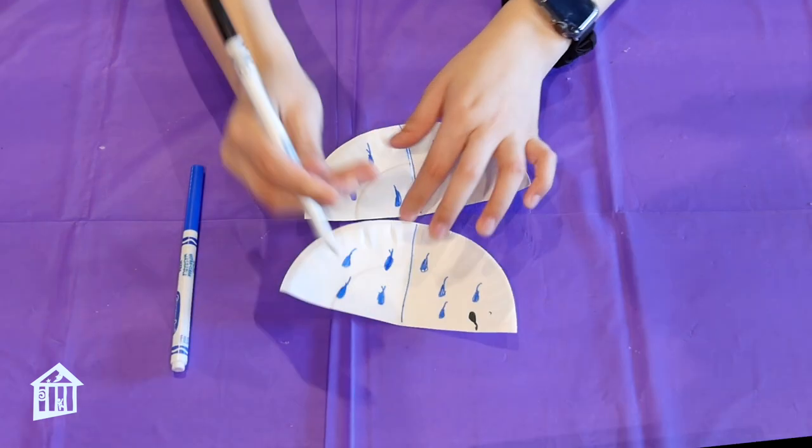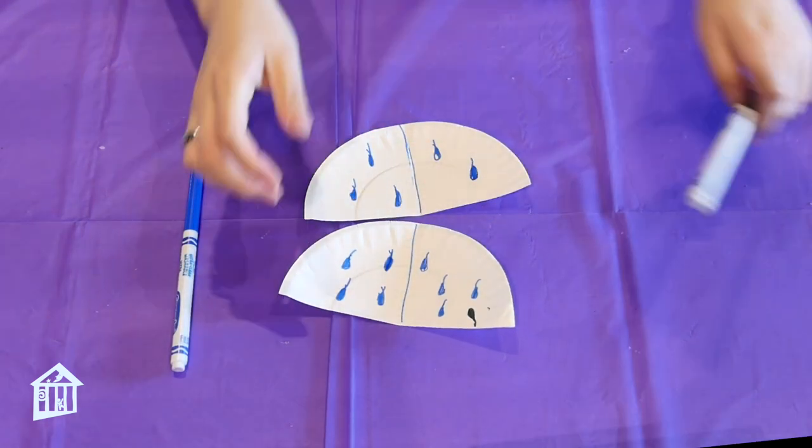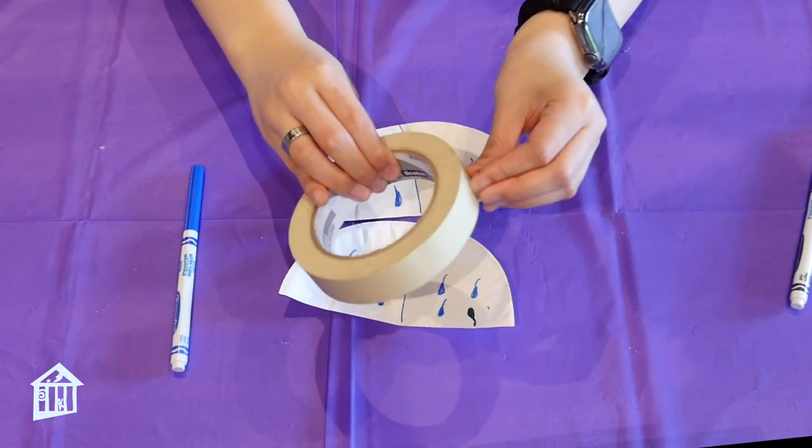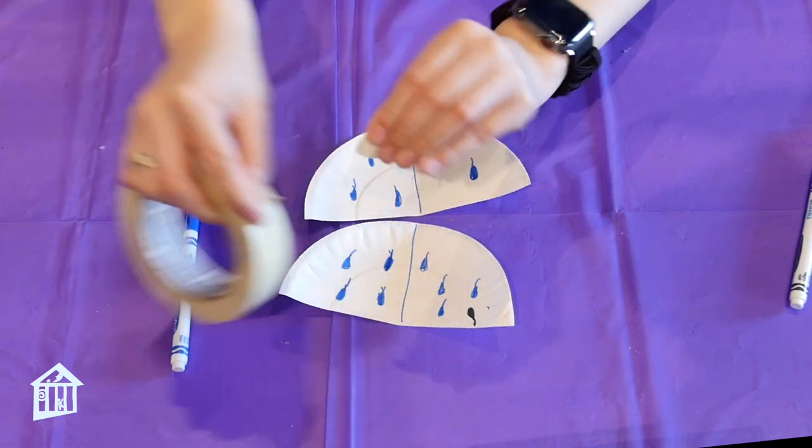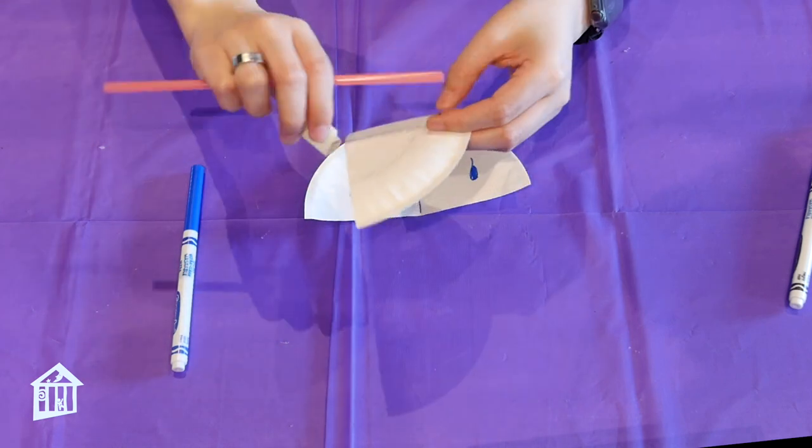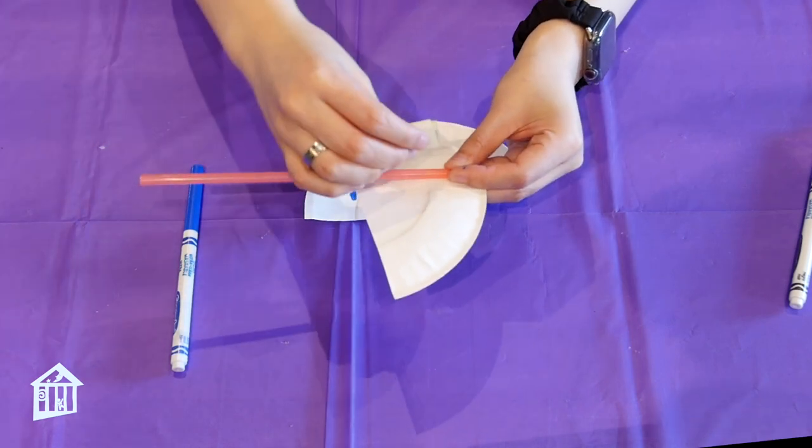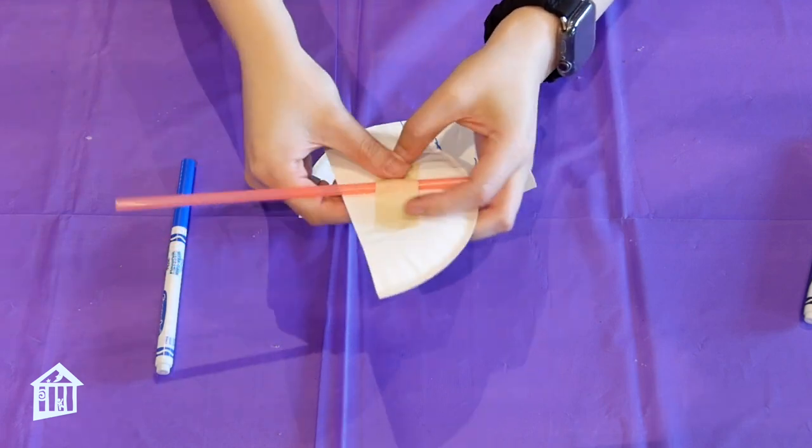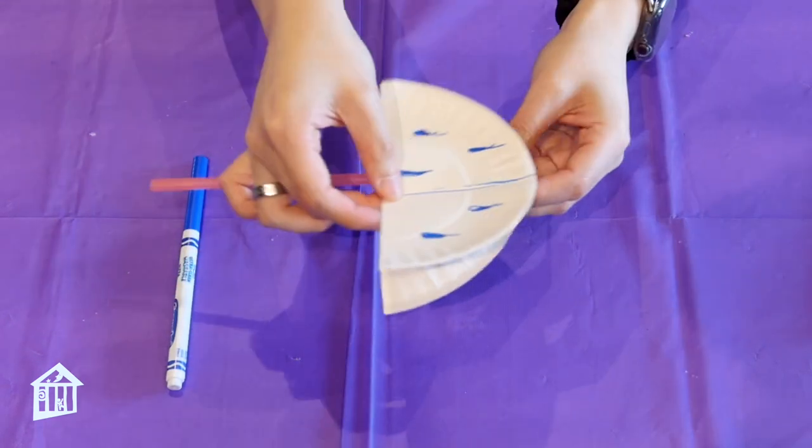We're gonna put these two pieces of plates together. So you're gonna grab your masking tape and your straw and we're going to tape it together. Grab the other one and you're going to place it on top.